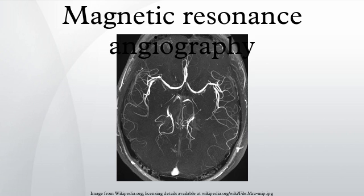Phase contrast PCMRA can be used to encode the velocity of moving blood in the magnetic resonance signal's phase. The most common method used to encode velocity is the application of a bipolar gradient between the excitation pulse and the readout. A bipolar gradient is formed by two symmetric lobes of equal area, and by definition the total area of a bipolar gradient is null. The bipolar gradient can be applied along any axis or combination of axes depending on the direction along which flow is to be measured.